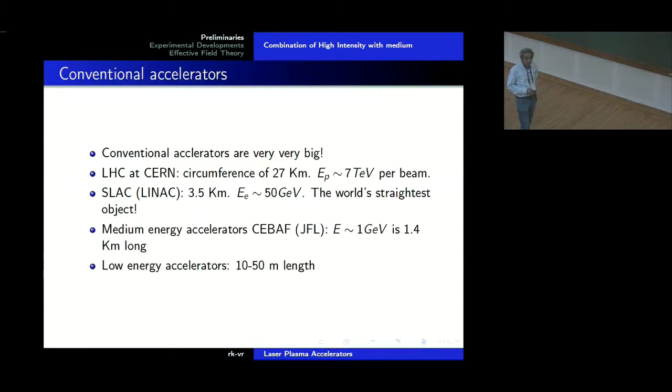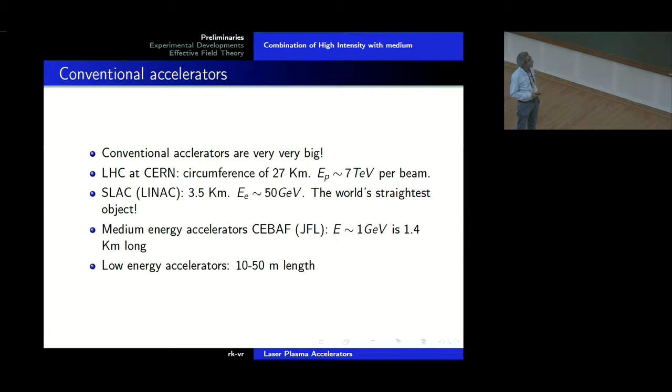So all these are illustrated with what I call tabletop accelerators. They are indeed table top accelerators because the most powerful of them is about a meter long. We have heard already from Rajaji and Vinod that conventional accelerators are very, very big. We have the LHC at CERN, which has a circumference of 27 kilometers.